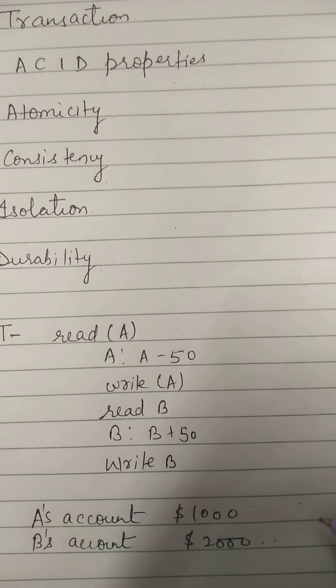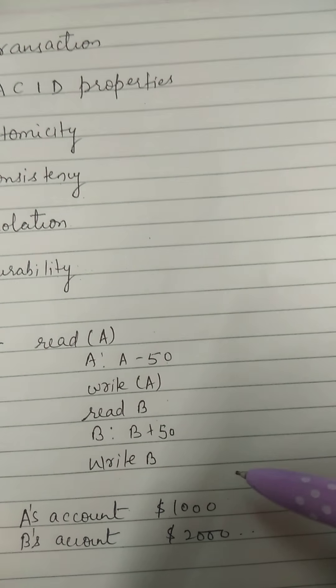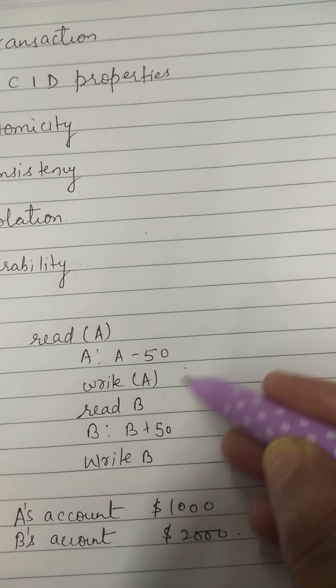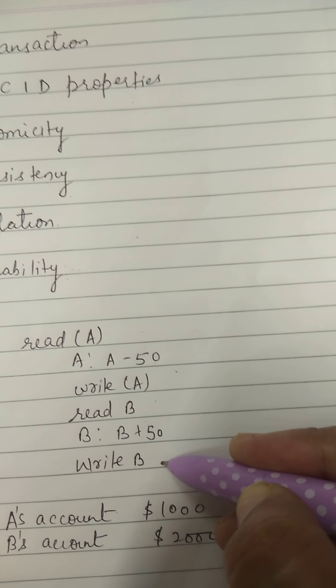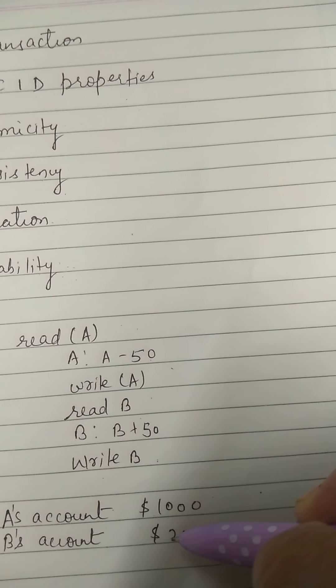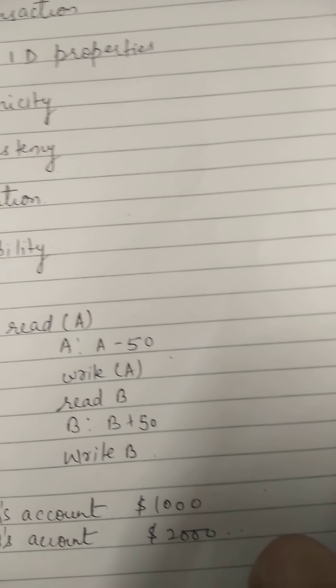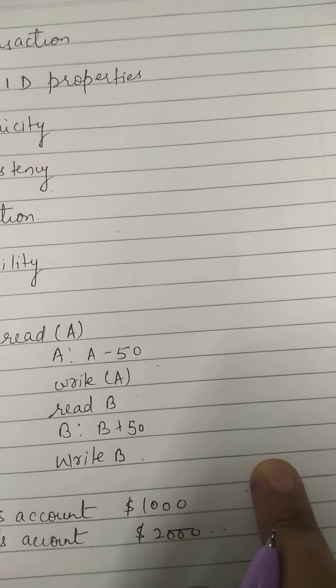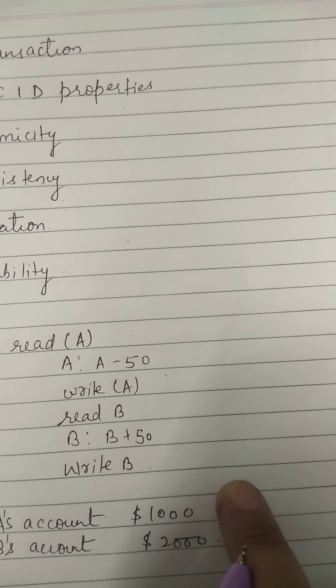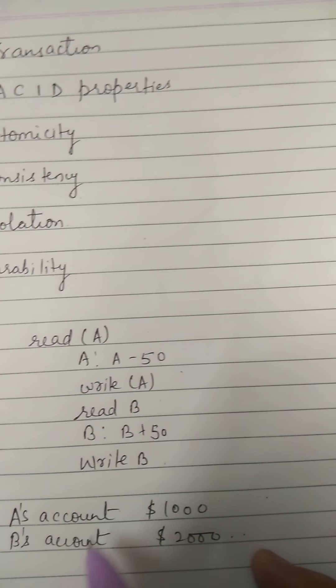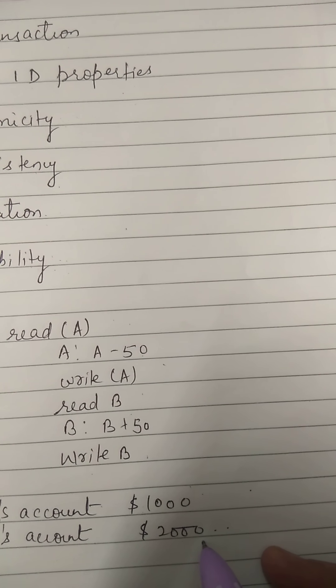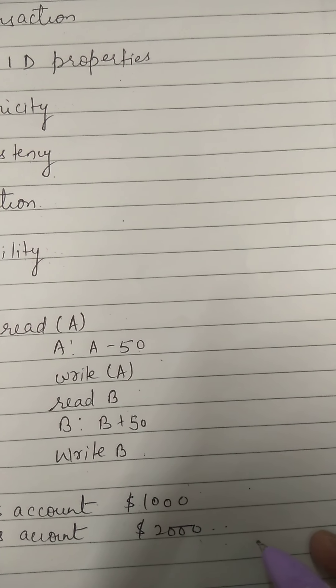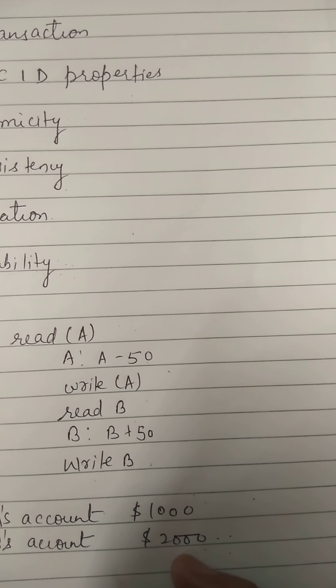Now what is atomicity property? Consider a failure occurs after write A operation, but before write B operation. In this case, the value of account A and B reflected in the database are $950 and $2000. Thus the sum of A + B is no longer preserved. So to ensure atomicity, database system keeps track of the old values, that are $1000 and $2000, of any data on which a transaction performs a write. If the transaction does not complete its execution, the database system restores the old values.